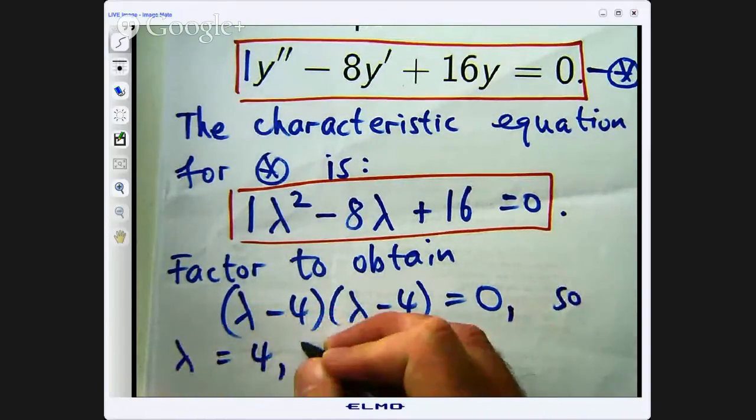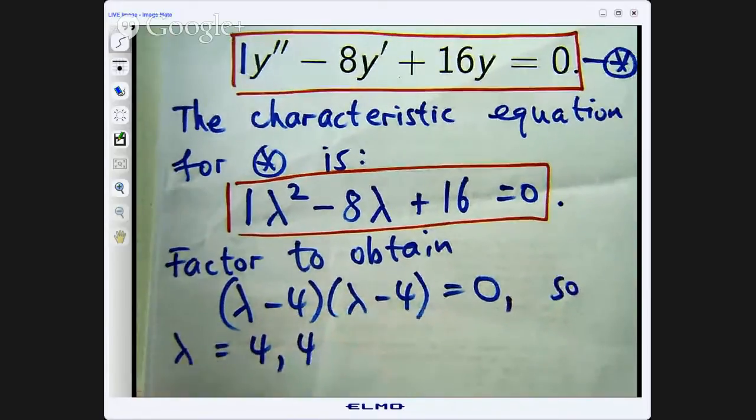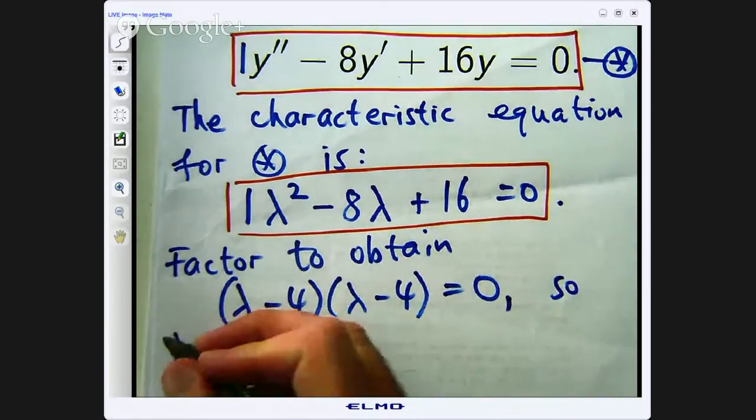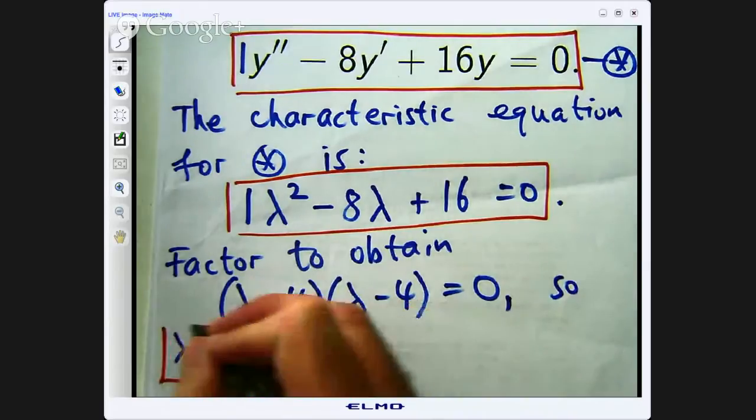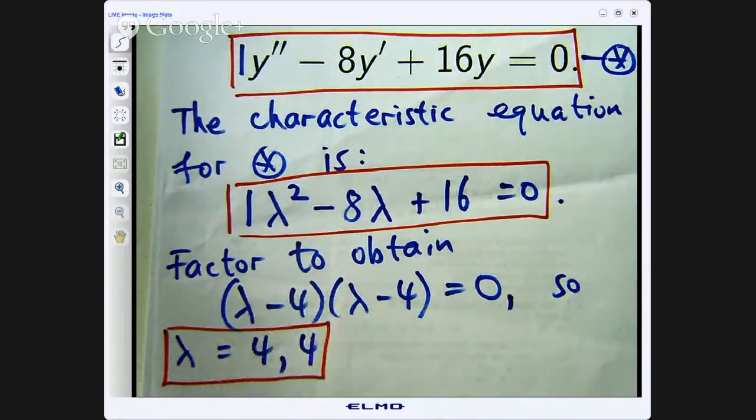So we know that lambda will equal 4. I am just going to write it out like that just as a little flag here. Or lambda is 4 with multiplicity 2.